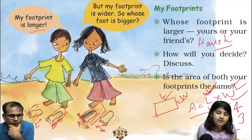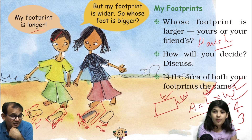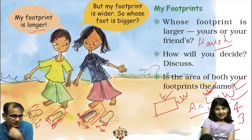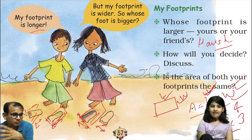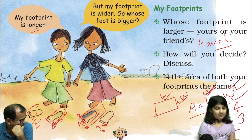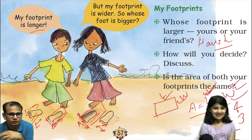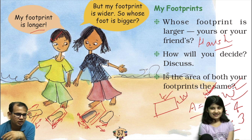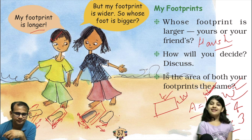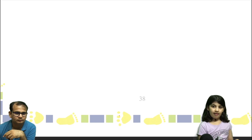Is the area of both your footprints the same? Yes, it can be same. If someone's length is more and width is less, and another's width is more and length is less, so area can be same. For me, Harika will be obviously less and less.